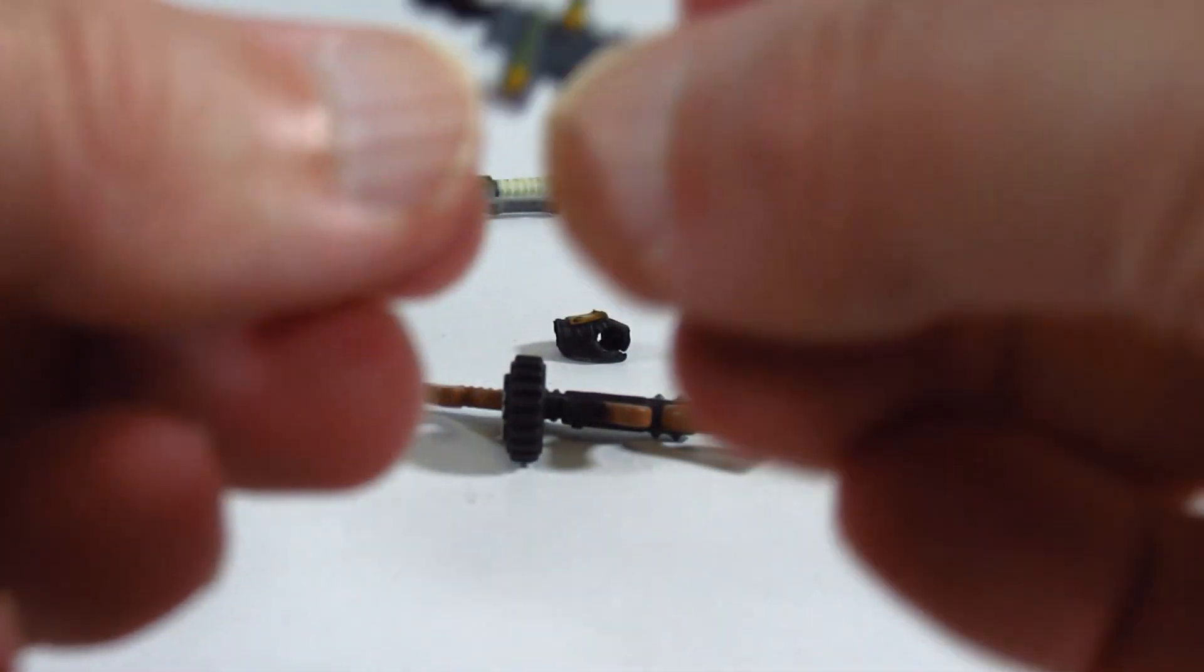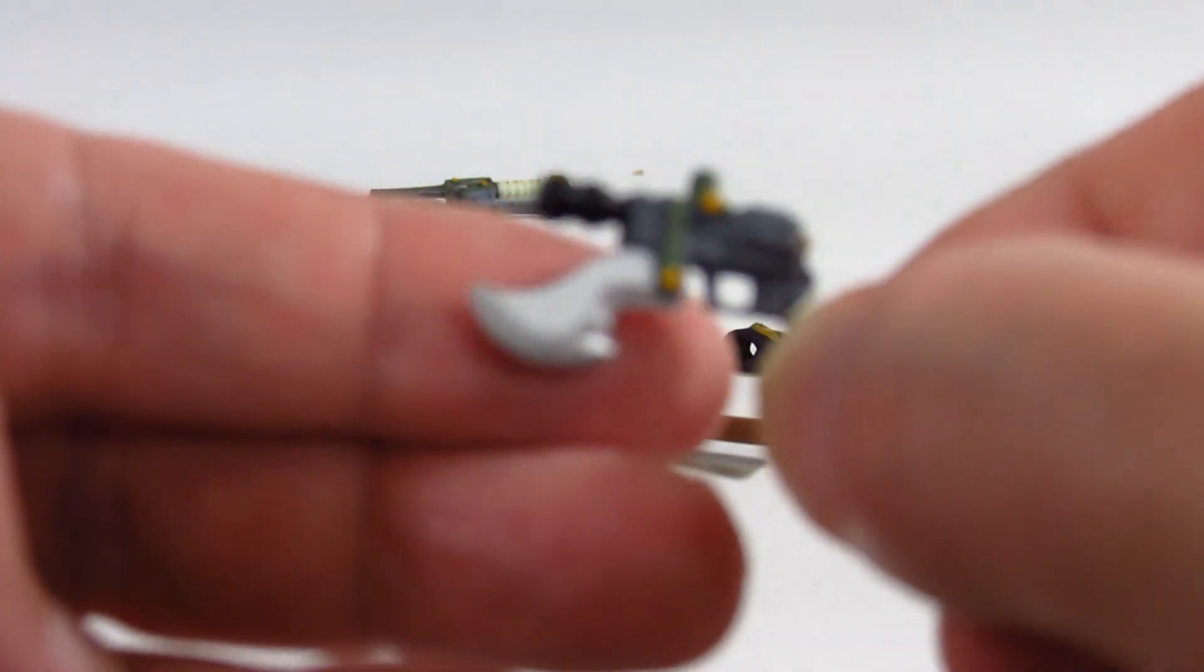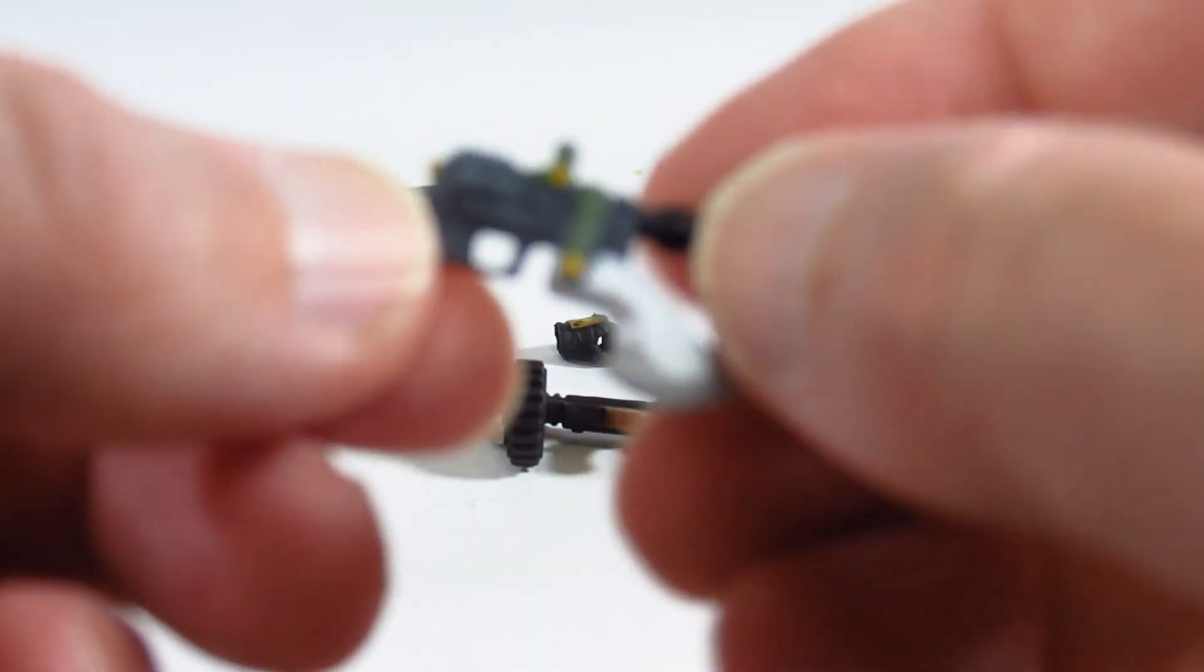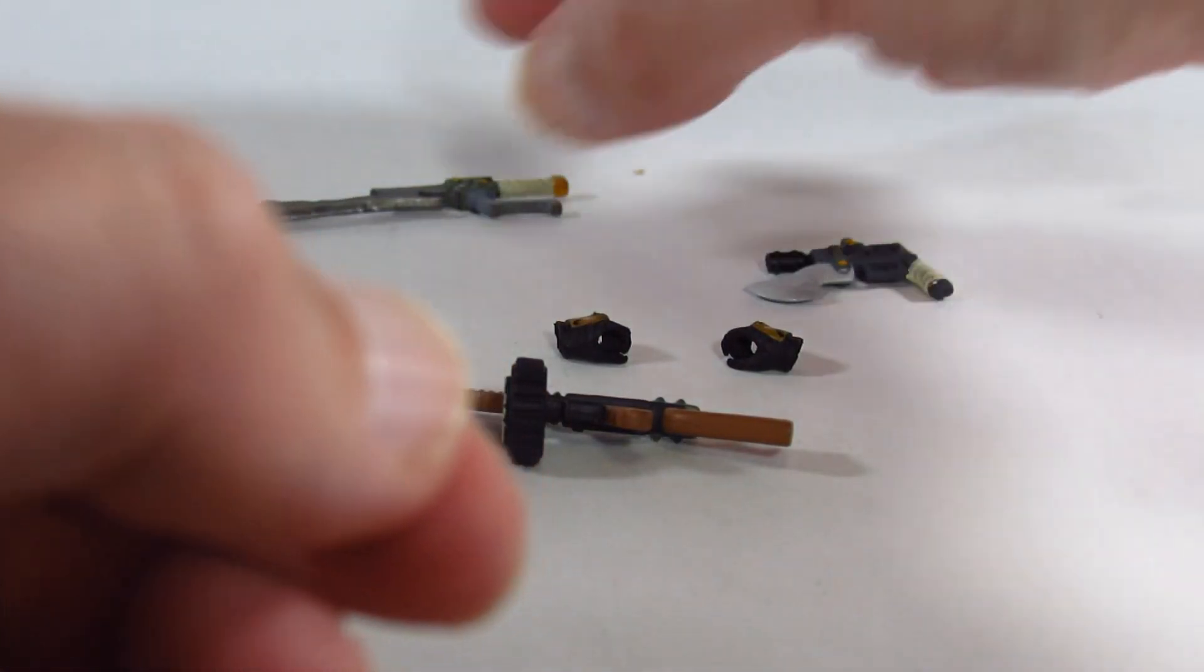Here's another little gun. It has a blade attached to the bottom of it there. Nicely sculpted and painted, and it's a rigid, stiff plastic so it will not bend.